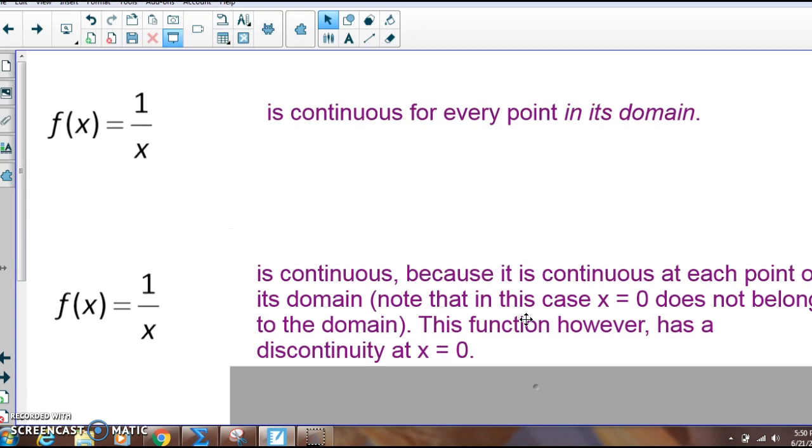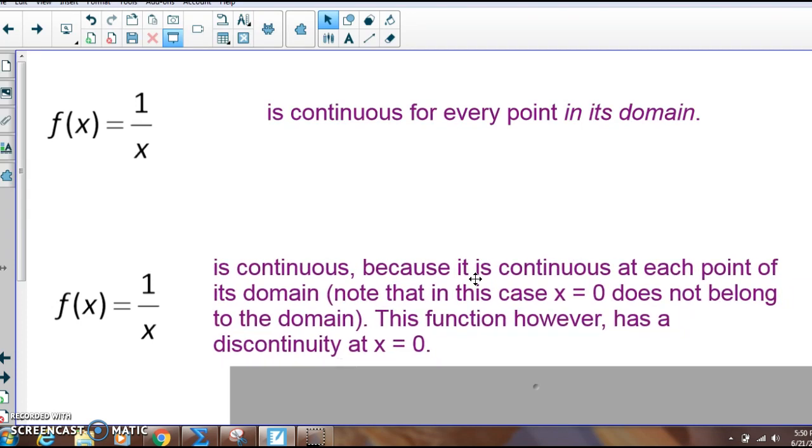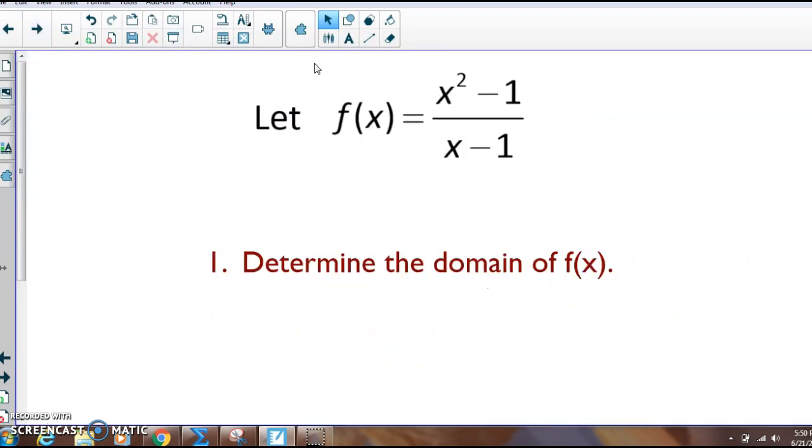So what we would say is that 1 over x is continuous because it is continuous at each point of its domain. So in this case, x equals 0 does not belong in the domain, so you can't even count it. However, you would still be able to say that the function is discontinuous or there's a discontinuity at x equals 0. Just a little thing to keep in mind when you're reading, especially AP type multiple choice questions as we get farther in the year.